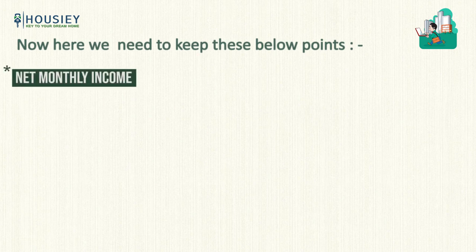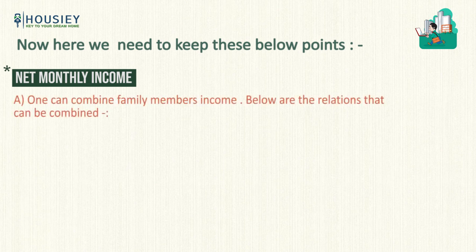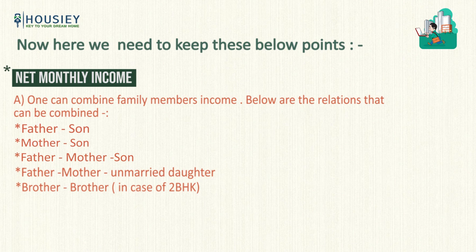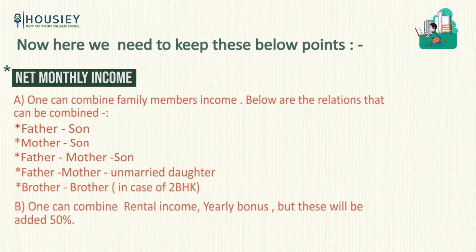A few important points to note. For net monthly income, you don't have to consider only individual income — you can combine family members' income. Eligible co-applicant relationships include father-son, mother-son, father-mother-son, father-mother-unmarried daughter, and even brother-brother in case of a 2BHK. You can also include rental income and yearly bonus, but these are counted at only 50% of their value. For example, if monthly rental income is ₹20,000, only ₹10,000 will be added to your income.